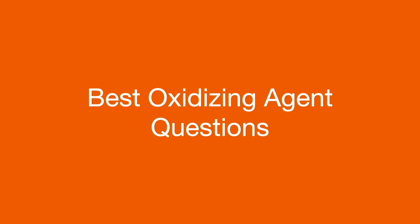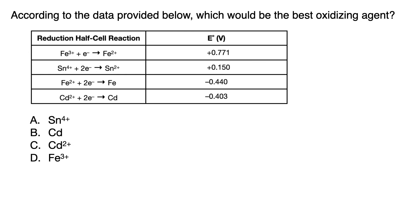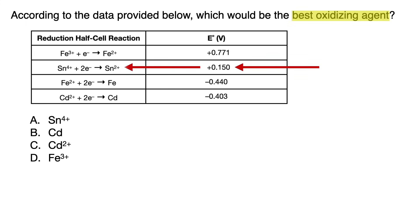Let's start with best oxidizing agent questions. You've surely come across questions like this one, asking for the best oxidizing agent, with a table of E values for half-cells in reduction form. Note that reduction half-cells with the electrons on the left side of the arrows are generally what you would be given on the MCAT, not oxidation half-cells. For best oxidizing agent questions, first eliminate any answers that have mid-lying E values, because 'best' would mean either highest or lowest number. So eliminate A because its E value is neither highest nor lowest.